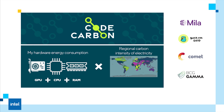CodeCarbon estimates the hardware electricity power consumption, in this case including CPU and RAM, and then takes into consideration the carbon intensity of the region where the computing is done. If you want to know more details about the calculations made by CodeCarbon, please check out their references or go to codecarbon.io.